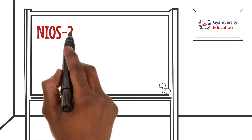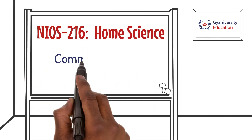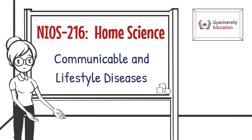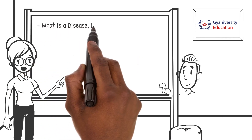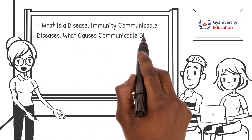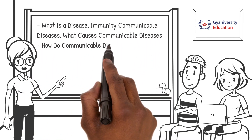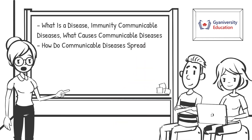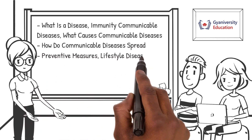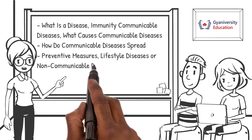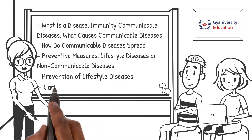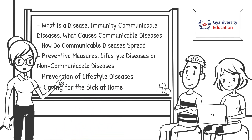Welcome to the home science lesson on communicable and lifestyle diseases. In this lesson you will learn about what is a disease, immunity, communicable diseases, what causes them, and how they spread. You'll also learn about preventive measures, lifestyle diseases or non-communicable diseases, prevention of lifestyle diseases, and caring for the sick at home.